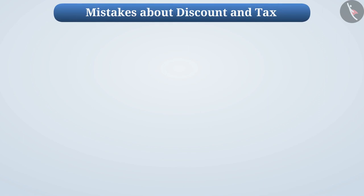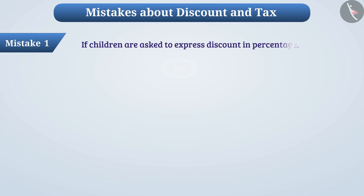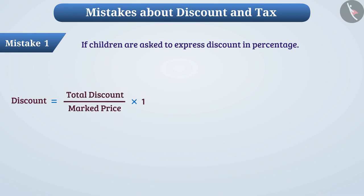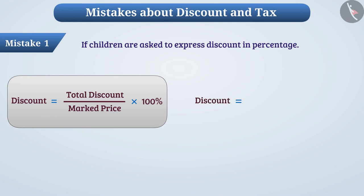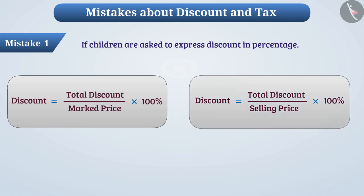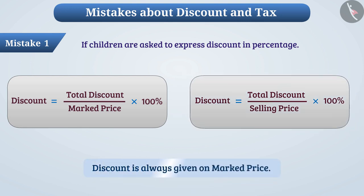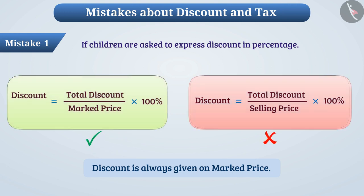Now let's see some mistakes. Mistake 1: If children are asked to express discount in percentage, they cannot decide if discount equals total discount divided by marked price multiplied by 100%, or total discount divided by selling price multiplied by 100%. Keep in mind that discount is always given on the marked price. That's why we find discount percentage on the marked price. The correct formula is: Discount% = (Total Discount / Marked Price) × 100%.